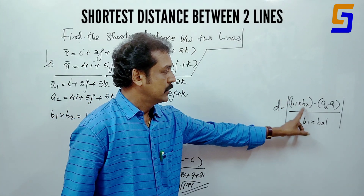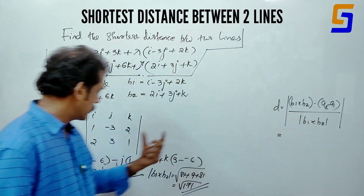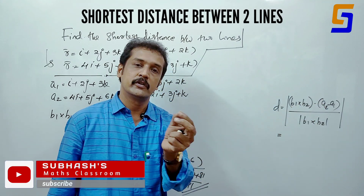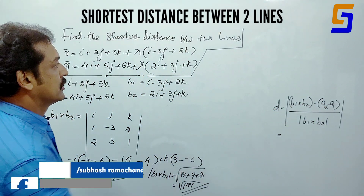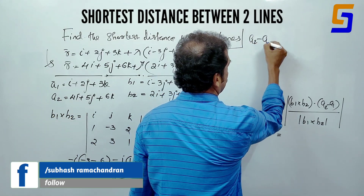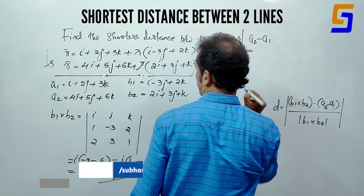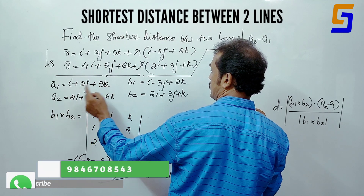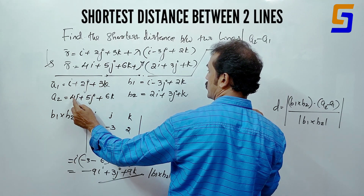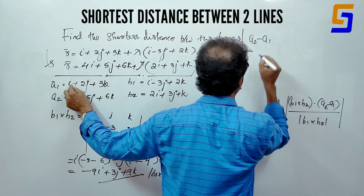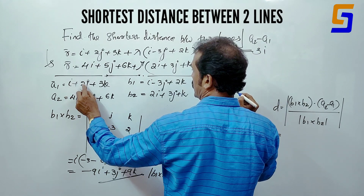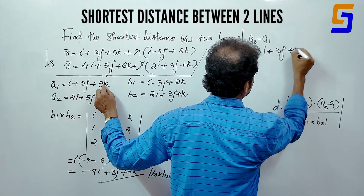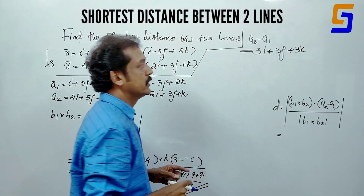Now, a2 minus a1 is equal to (4i plus 5j plus 6k) minus (i plus 2j plus 3k). That gives 3i plus 3j plus 3k.